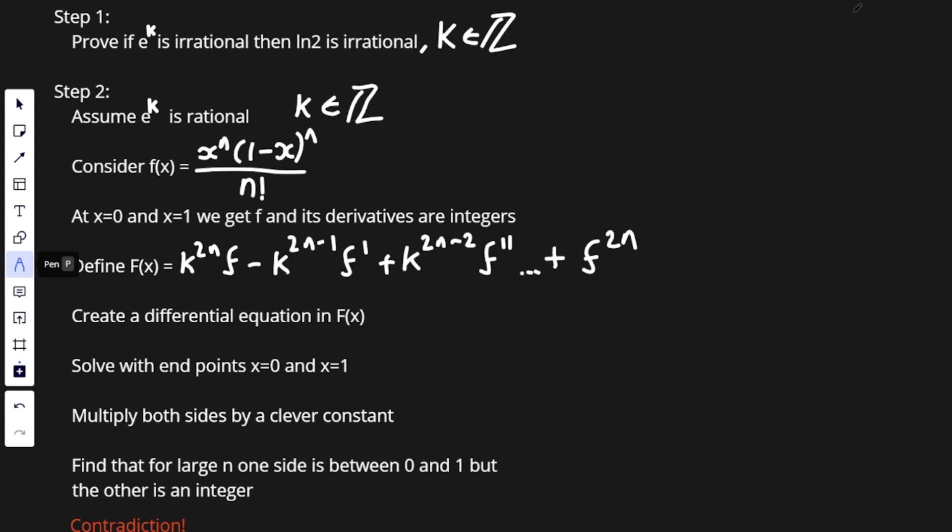Hi, welcome to this video where we're going to prove that ln2 is irrational. We're going to start off by proving that if e to the k is irrational, then ln2 is irrational, where k is in the integers.